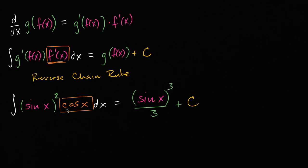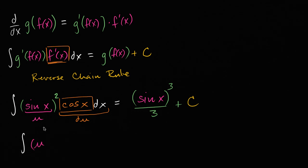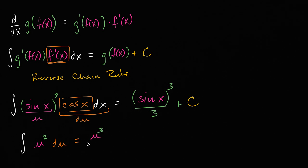How does this relate to u-substitution? In u-substitution, you would have set u equal to sine of x, so du equals cosine of x dx. You'd set sine of x to be u, and cosine of x dx to be du. Then you'd have the integral of u squared du, which equals u to the third power over three plus C. Reverse substituting u back to sine of x gives you exactly the same result.